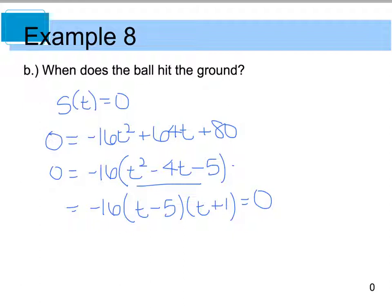By the zero product property, I know that when I take these factors and set them equal to 0, I can solve for t. So t is equal to 5 or negative 1. Well, because I want to know when the ball is hitting the ground, it makes no sense whatsoever to have a negative time. So this tells me that the ball will hit the ground when the time equals 5 seconds. So on that note, I'm going to wish you all a good night and I will see you in class tomorrow.